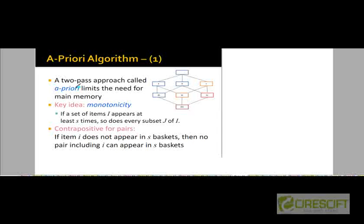In order to discover frequent pairs, the A Priori algorithm is going to do two passes, and this two-pass approach is going to limit the need for main memory. If we had to discover frequent singletons, pairs, triples, and so on all in a single pass, that would require a lot more main memory, because we would need to keep track of counts for pairs and triples all at the same time. A two-pass approach specifically limits the need for main memory.